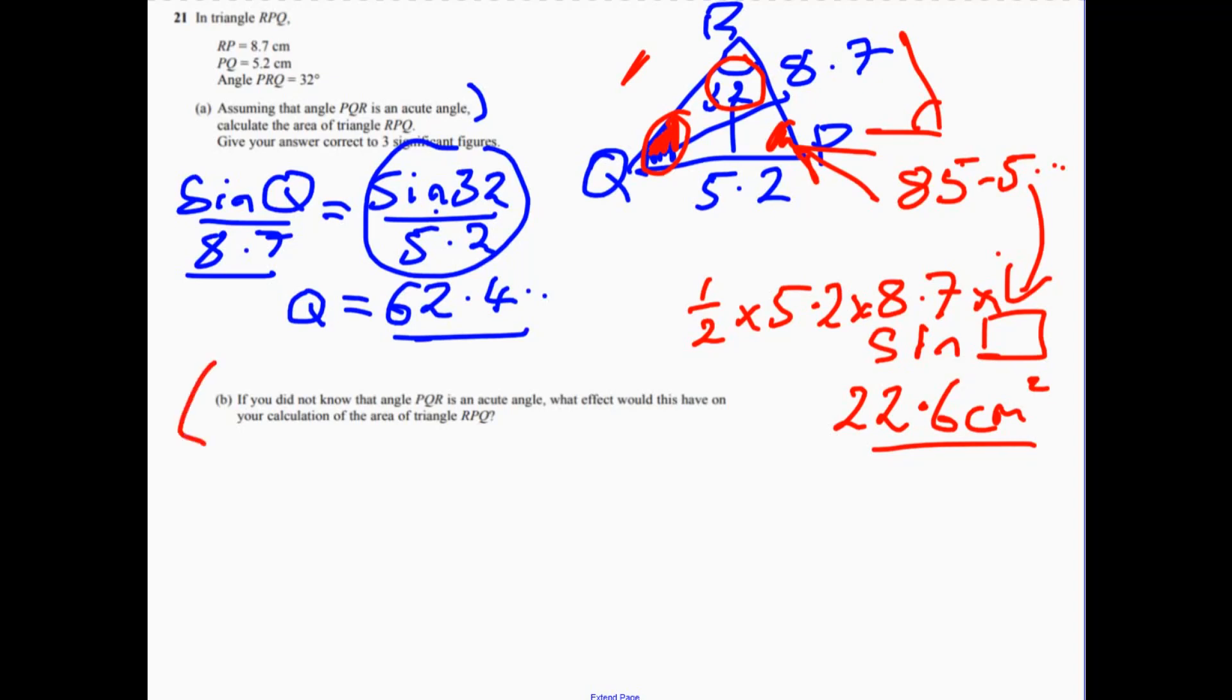Right. So part B. If we didn't know that that angle was acute, let's say if it was obtuse, for example, what would happen? Well, if it was obtuse, then it would make quite a big difference, wouldn't it?